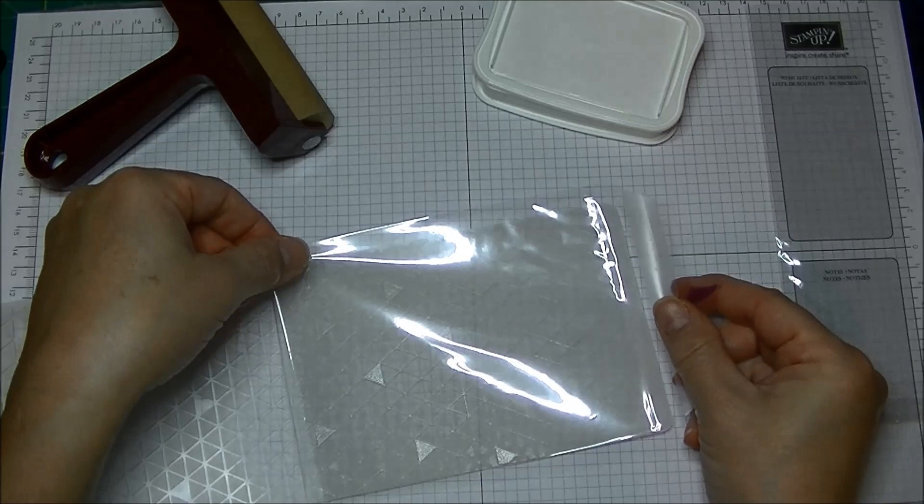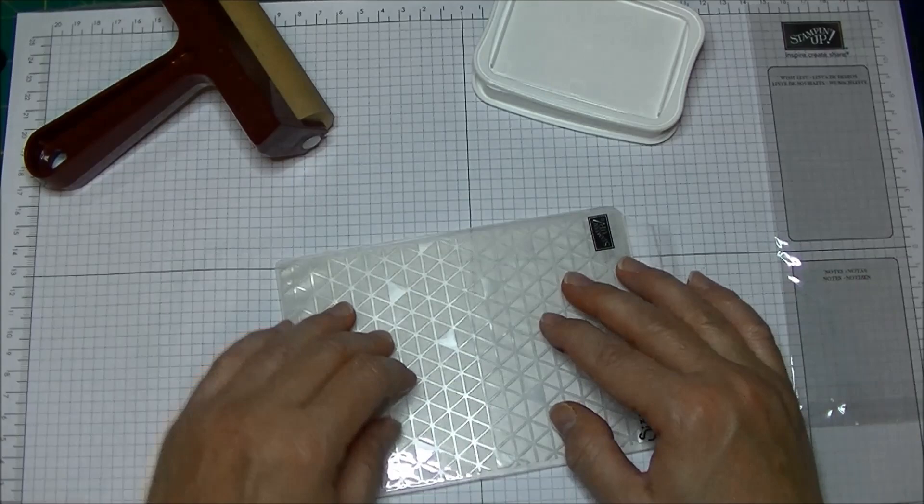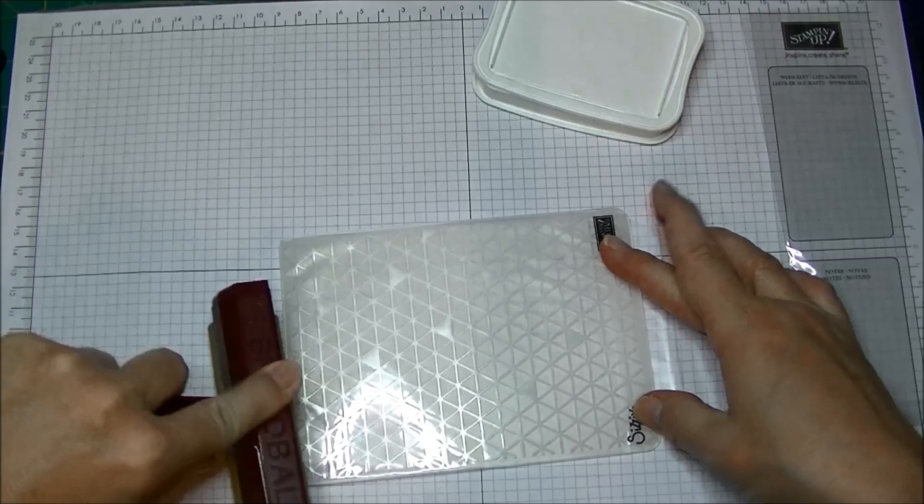It doesn't matter which side of this I'm going to put in but I would like the front to go down toward the inked embossing folder. I'm going to close this up and then with a bit of pressure I'm just going to roll my brayer back and forth.